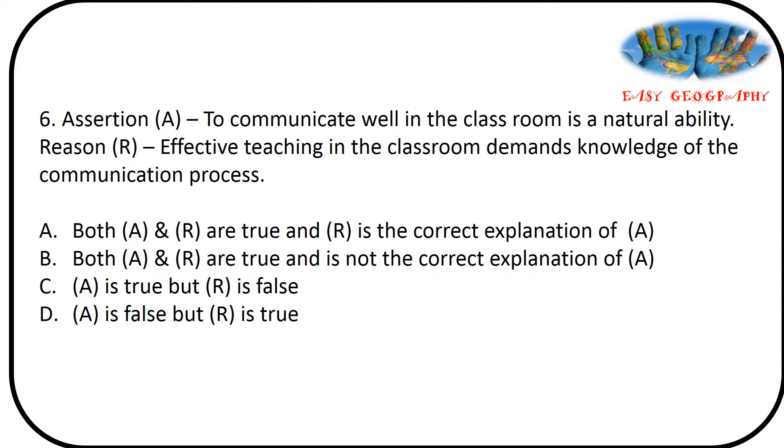Assertion reason question. Assertion statement is to communicate well in the classroom is a natural ability. Reason: Effective teaching in the classroom demands knowledge of the communication process. Here the first statement, assertion statement, to communicate well in the classroom is a natural ability is a wrong statement. Because communication is a learning ability. For someone it is natural ability but we can learn the ability of communication. So the assertion statement is wrong. And effective teaching in the classroom demands knowledge of the communication process, the correct statement. So the answer is option D. A is false but R is true.